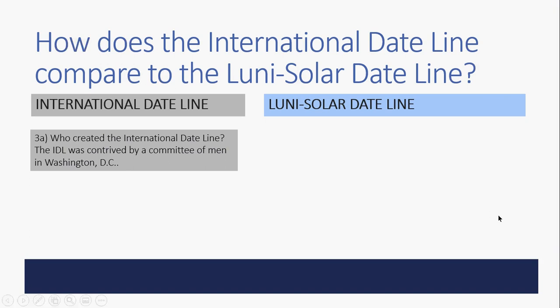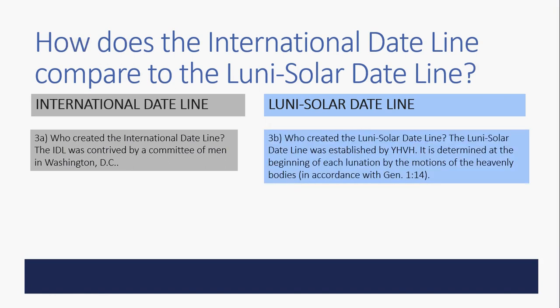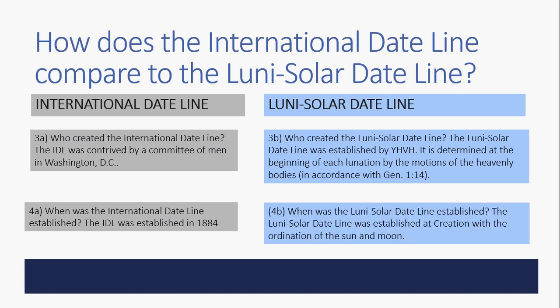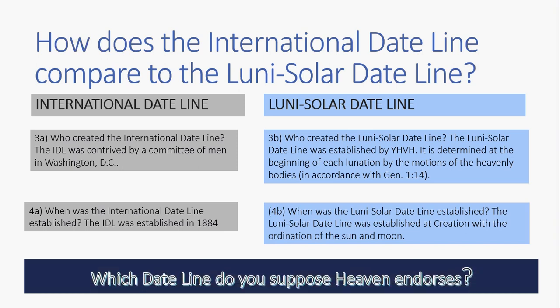Who created the international dateline? It was contrived by a committee of men in Washington, D.C. Who created the lunar-solar dateline? It was established by Yehovah, determined at the beginning of each lunation by the motions of the heavenly bodies in accordance with Genesis 1:14. The international dateline was established in 1884; the lunar-solar dateline was established at creation with the ordination of the sun and moon. So which dateline do you suppose heaven endorses?